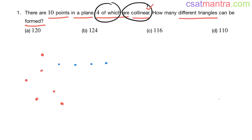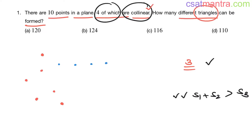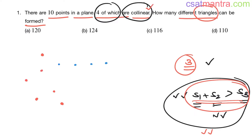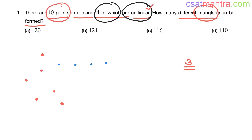To draw a triangle you need three points. There is one more rule which must be satisfied: the sum of lengths of two sides must be greater than the length of the third side. However, we are not talking about lengths in this problem, so by default you can take this rule as satisfied. In permutation and combination problems we don't need to pay attention to this rule, otherwise the problem becomes very complicated.